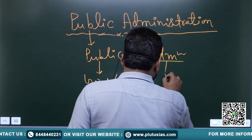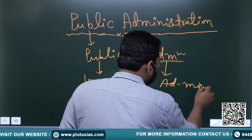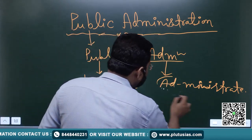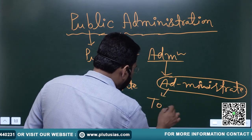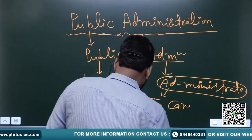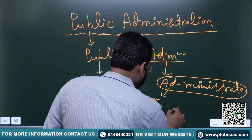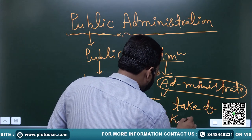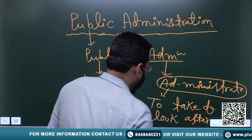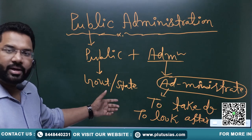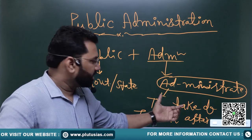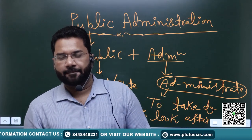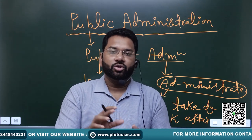The word 'administration' is itself comprising of two words — 'ad' and 'ministrate' — which collectively stand for 'to take care of' or 'to look after.' So, 'public' means government or state, and 'administration' means to take care of the public. The simple meaning of public administration is: the government looking after the people, the government taking care of the people.